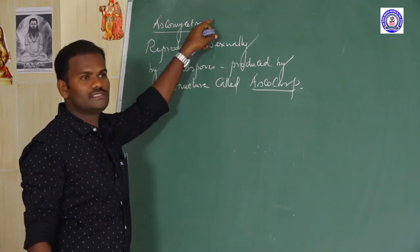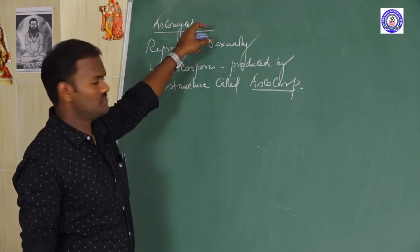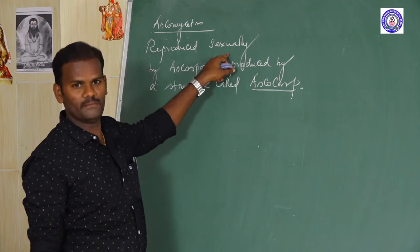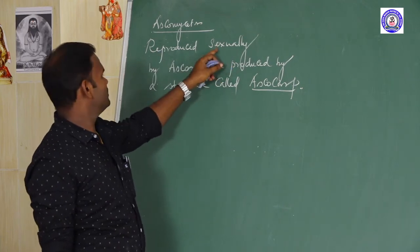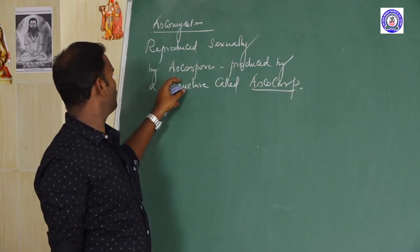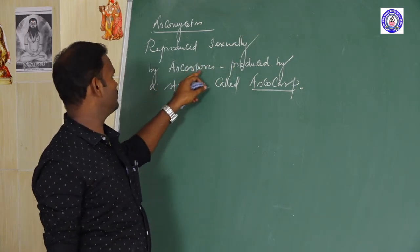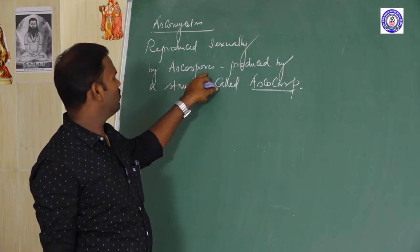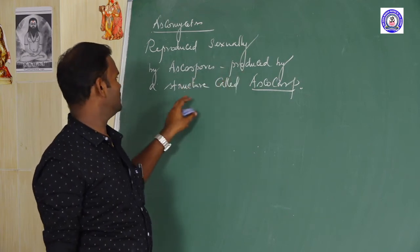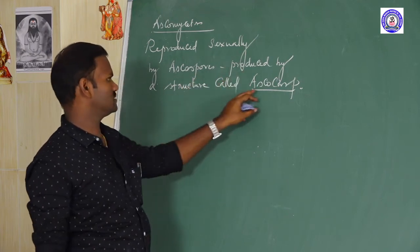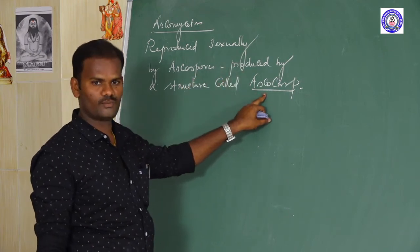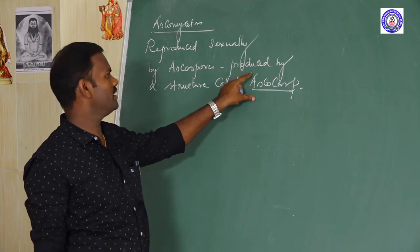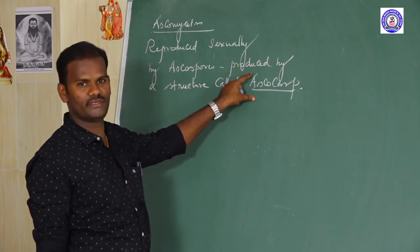Next, how ascomycetes fungi actually reproduce sexually. Sexual reproduction takes place by spores called ascospores, produced by a specialized structure called the ascocarp. The ascocarp is actually the fruiting body of ascomycetes fungi.